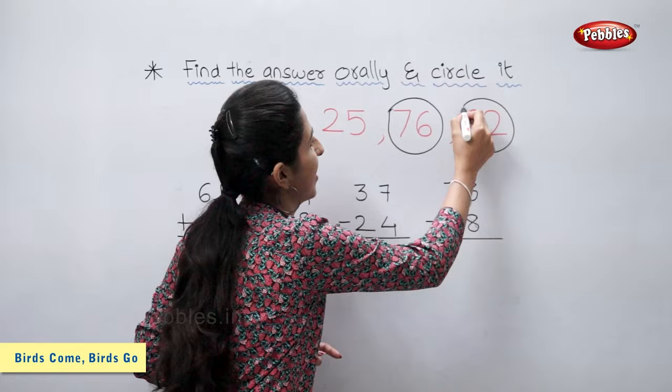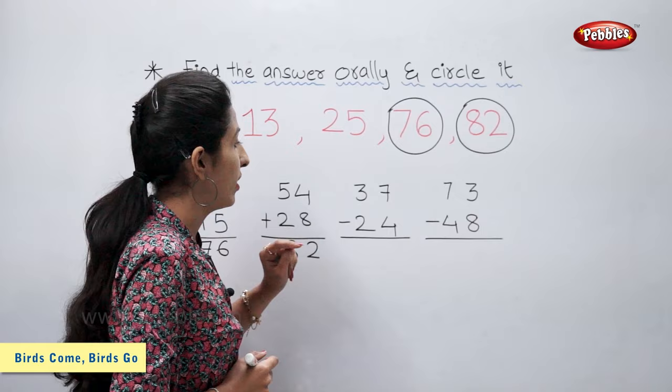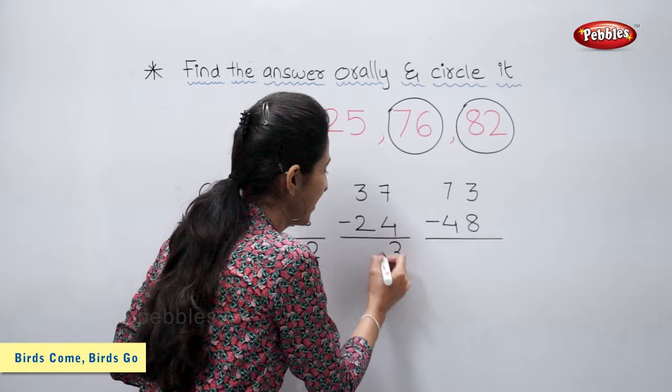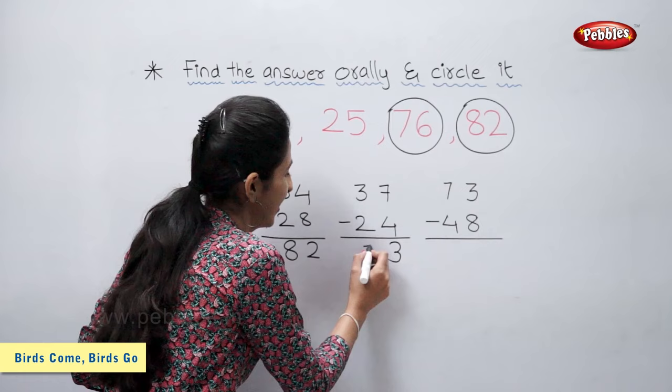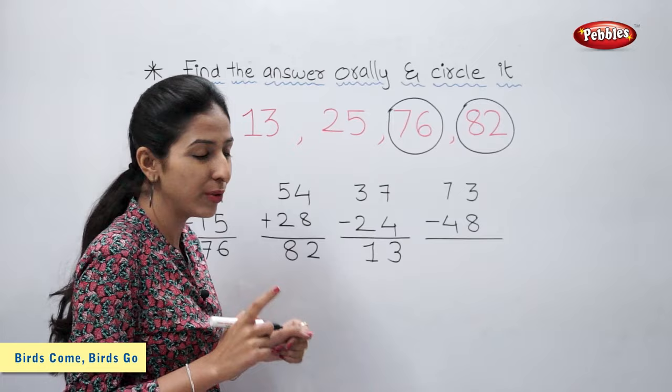37 minus 24. 7 minus 4 is 3. 3 minus 2 is 1. So 37 minus 24 is equal to 13. Let's circle number 13.